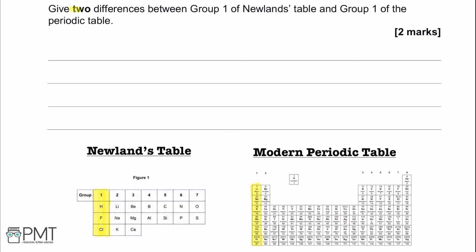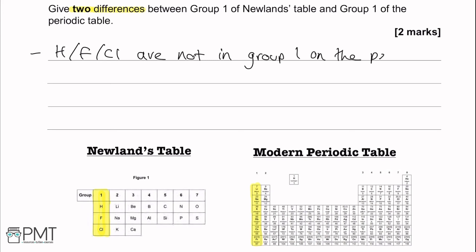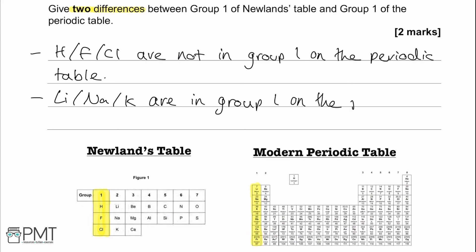Give two differences between group 1 of Newlands' table and group 1 of the periodic table. In Newlands' table, group 1 contains hydrogen, fluorine, and chlorine — none of which are in group 1 of the modern periodic table. That's one mark. For the second mark, lithium, sodium, or potassium are in group 1 of the modern periodic table but are not in Newlands' table. Alternatively, you could say hydrogen, fluorine, and chlorine are not in the same group on the modern table.